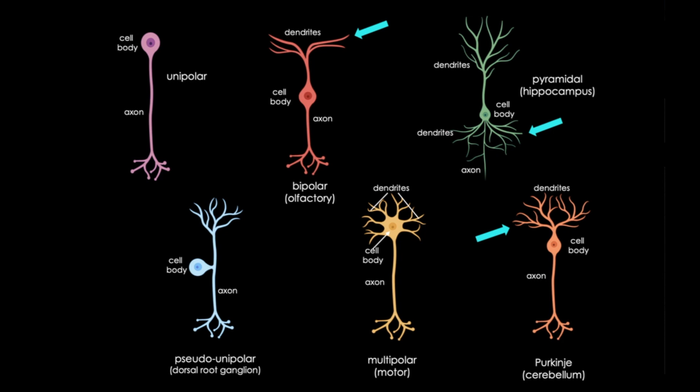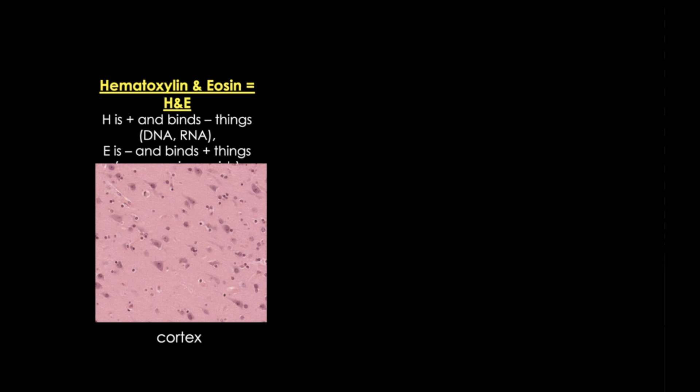Histologically speaking, it's pretty hard to actually visualize neurons using our basic stains. Here is a hematoxylin and eosin stained, or H&E, stained image from the cortex. And you can really only see the cell bodies of the neurons here in pale purple.